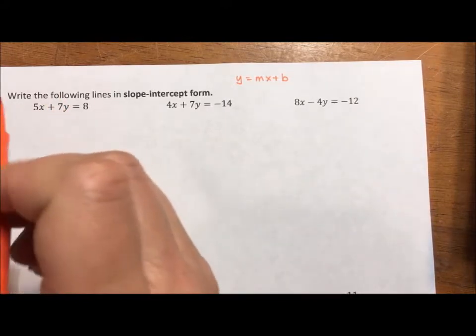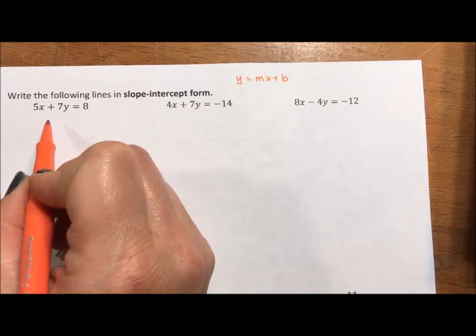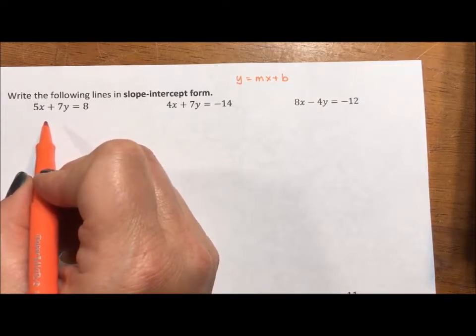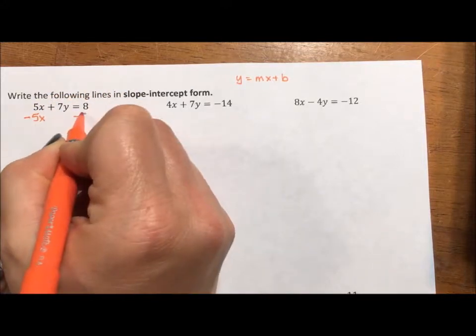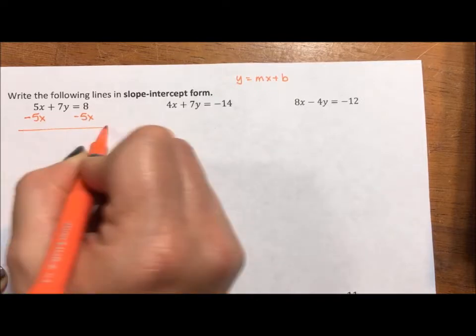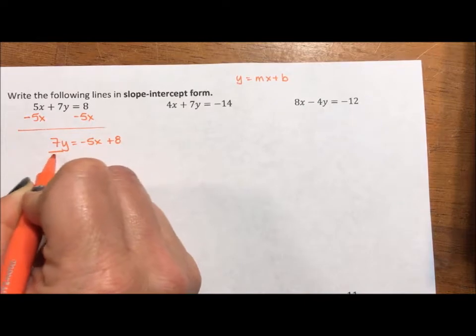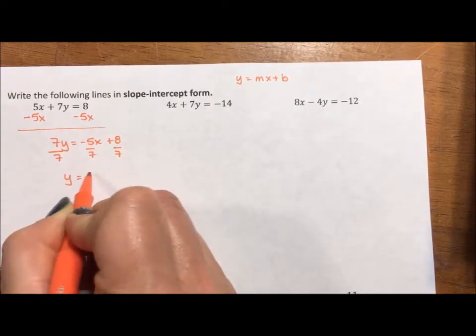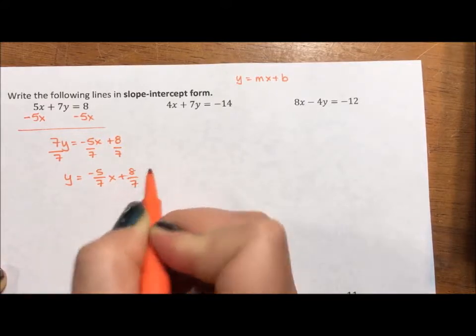To go from standard form to slope-intercept form is two steps. You move your x term over—subtract 5x from both sides. They're not like terms. 7y equals negative 5x plus 8. Then divide to get y alone. y equals negative 5/7 x plus 8/7. Done.